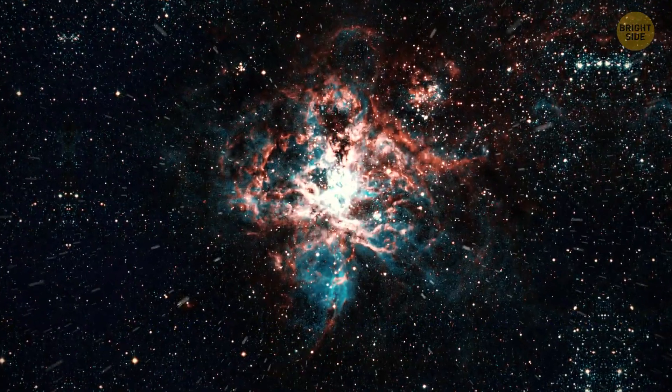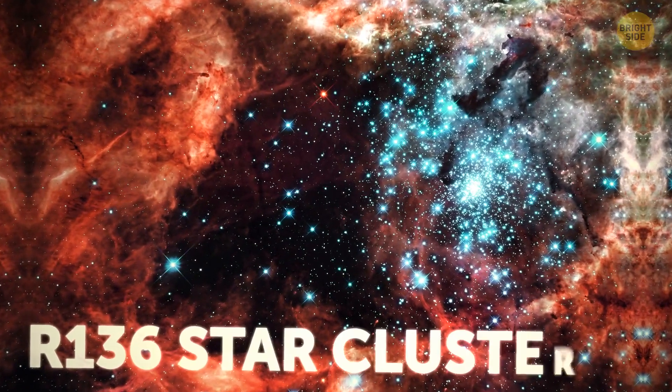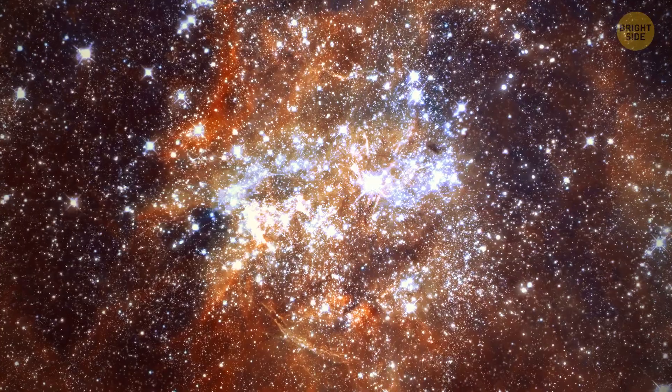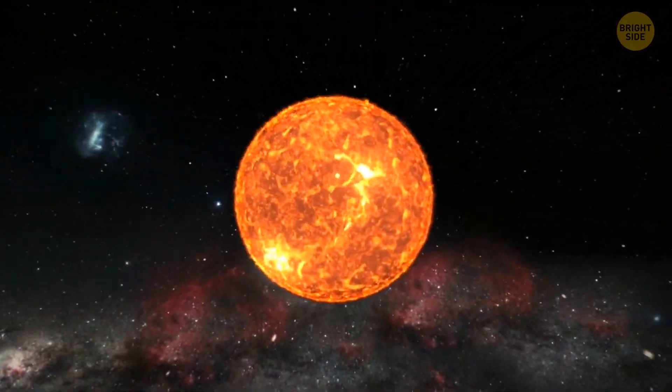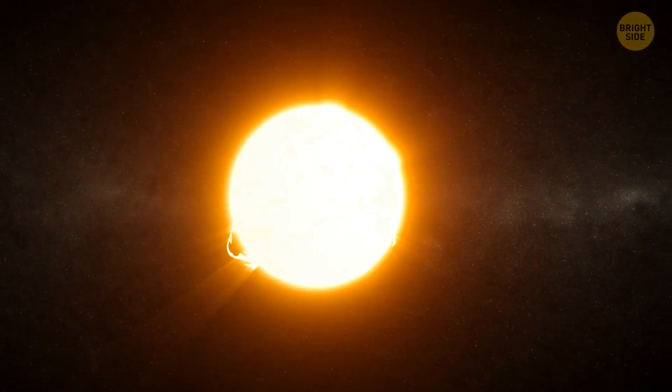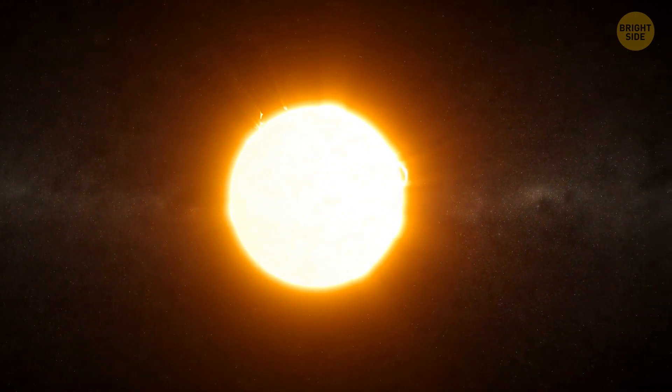Now, straight ahead in the heart of the Tarantula Nebula is the R136 star cluster. Within a distance of one light-year, there are over 40 stars each with a mass over 50 times that of the Sun. Wow! Comparatively, there isn't a single other star within four light-years of our home star, Sol. And that's a good thing.